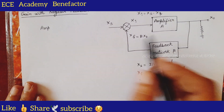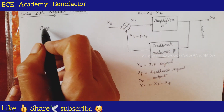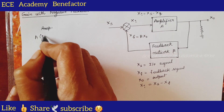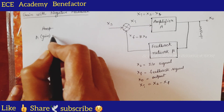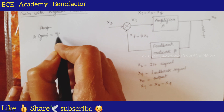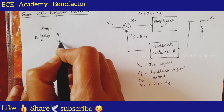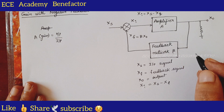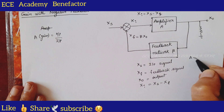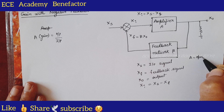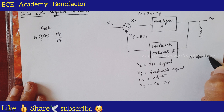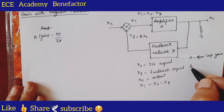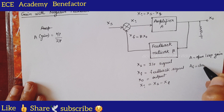What is gain? Gain A is the ratio of output by input. A is the open loop gain. There are two gains: A is the open loop gain and A_f is the closed loop gain.